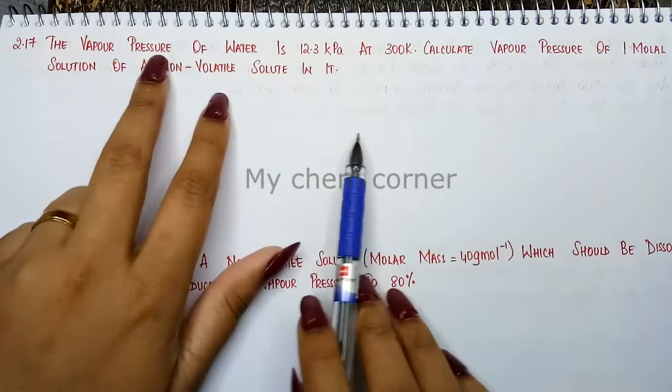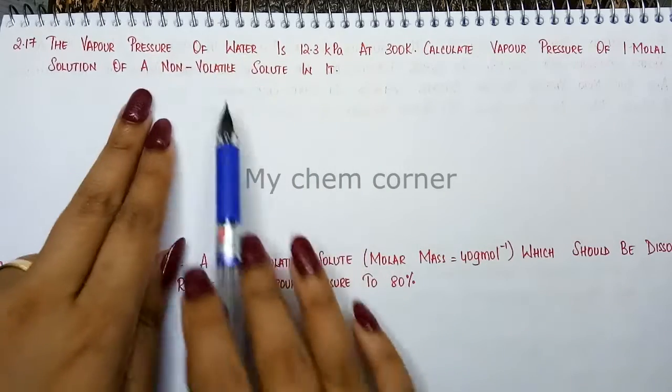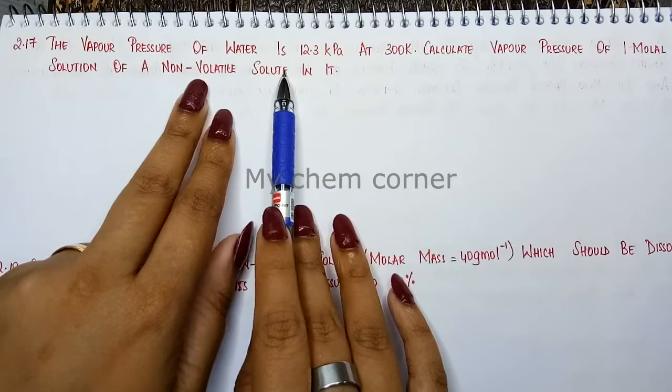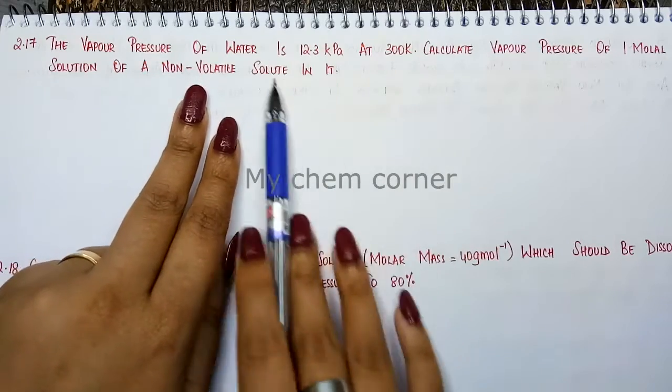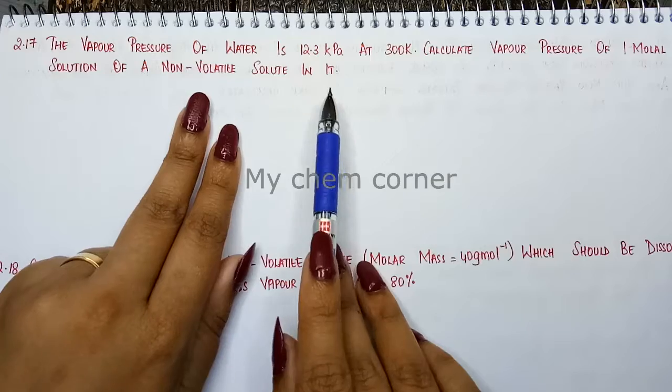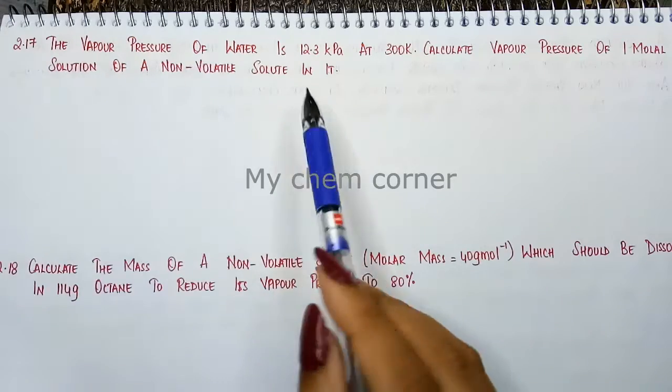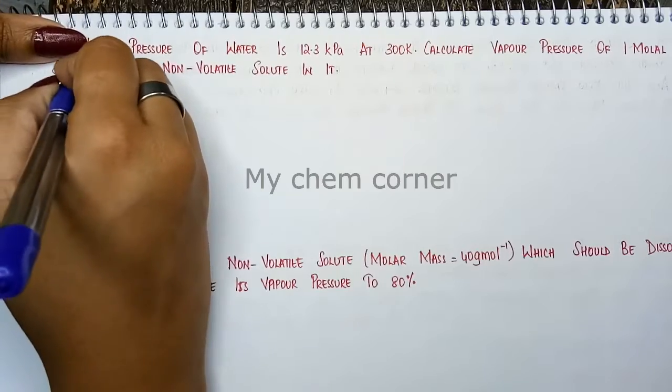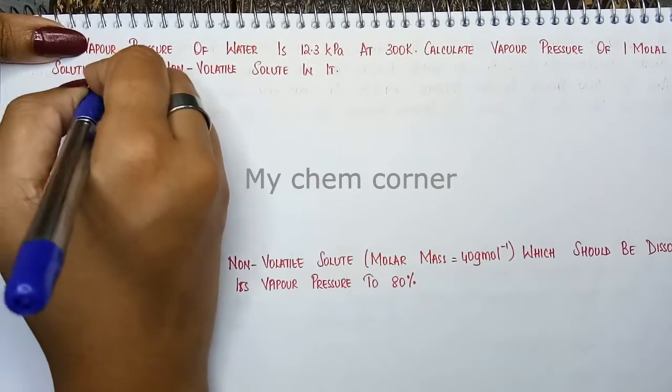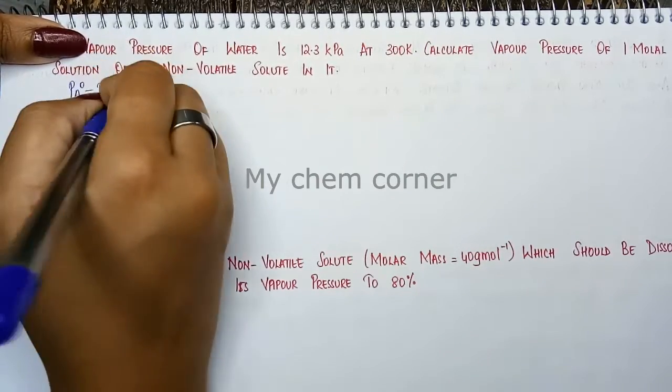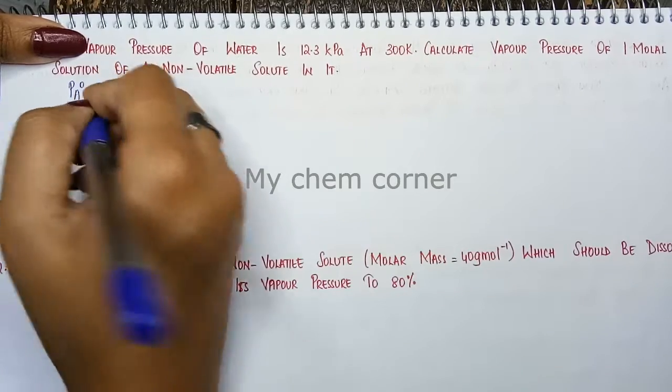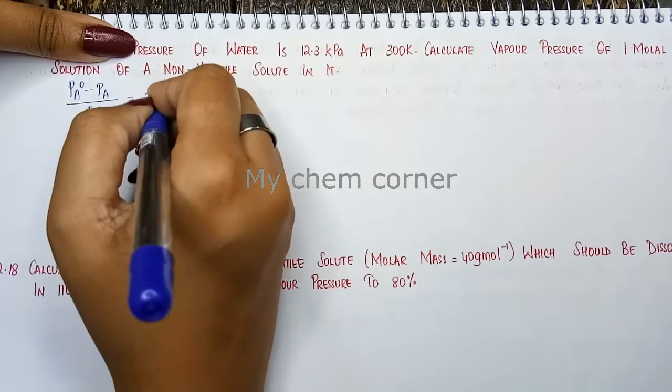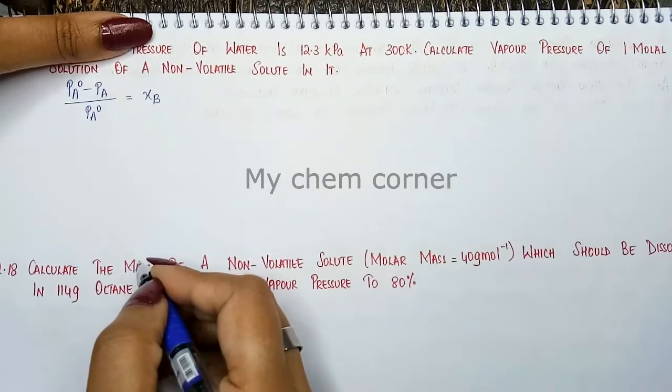Since they are talking about vapor pressure of water and of a non-volatile solute, we will consider the formula of relative lowering of vapor pressure. The formula for relative lowering of vapor pressure is P_A0 minus P_A divided by P_A0, which is the relative lowering of vapor pressure, that is going to be equal to the mole fraction of the solute.